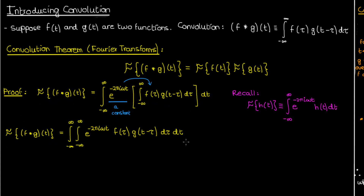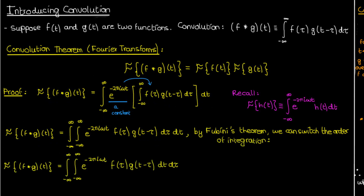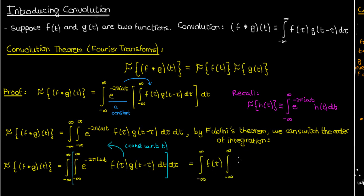This expression on the right is a double integral, and assuming that f, g, and the exponential are all nice and continuous, we can switch the order of integration according to Fubini's theorem. So now we integrate with respect to t first, then with respect to tau. Using square brackets to distinguish the separate integrations, the nice thing is that f of tau is a constant with respect to t, so we can take it outside of the bracketed integral — the integral with respect to t.